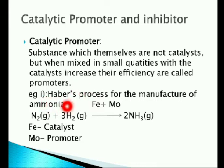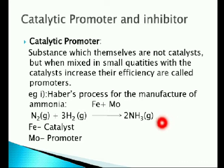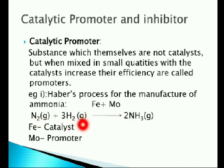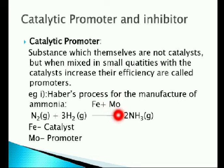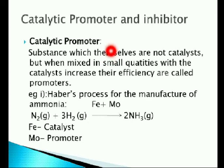Example one: Haber's process for the manufacture of ammonia. Ammonia is formed by the combination of nitrogen and hydrogen in gaseous phase in the presence of iron (Fe) as the catalyst. Here, molybdenum is added in small quantities to increase the activity of the iron catalyst. So molybdenum acts as the catalytic promoter.